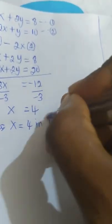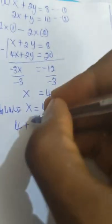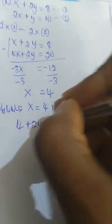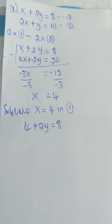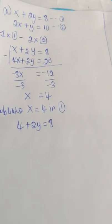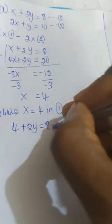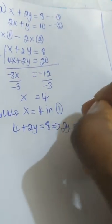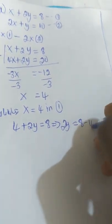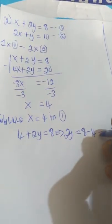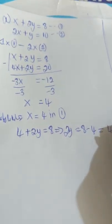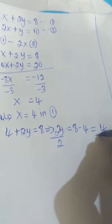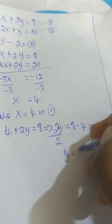Substituting x equal to 4 into equation one, we have x plus 2y equal to 8, so 4 plus 2y equal to 8. That implies 2y is equal to 8 minus 4, which gives 4. Divide both sides by 2, and y will be equal to 2.